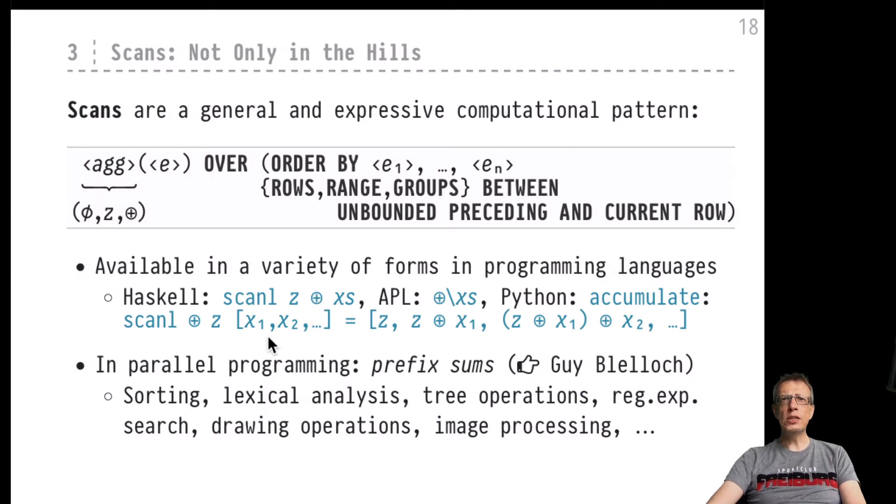The result of this computation would start off with zero and it would then add to that zero the first element x1 inside the list. And to that it would then merge the second element x2 in that list and so on and so on. And that would be the result of the scan.